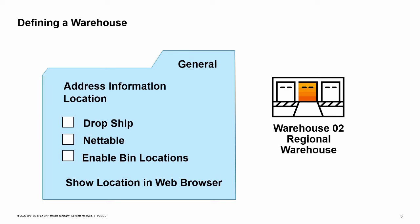Another option is whether you want this warehouse to be considered in material requirements planning. A third option, new in 9.0, is the option to use bin locations as sublevels within your warehouses. This option would not be available if this is a drop ship warehouse. Other fields for tax information may be visible depending on the localization.